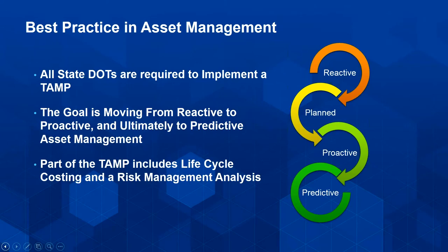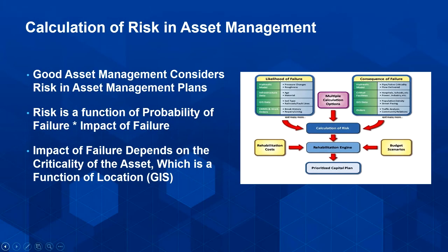Federal highways, TRB, and AASHTO have spent considerable effort on education around best asset management practice. The goal is to move from reactive maintenance, which tends to be much more costly over the long run, to proactive and ultimately predictive asset management, so we can greatly reduce the risk of failures and significantly reduce lifecycle costs. States are required to demonstrate they've included a risk analysis in their overall asset management plans.